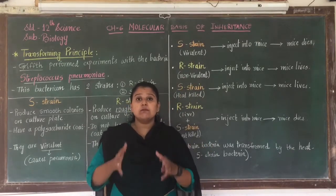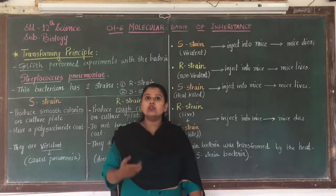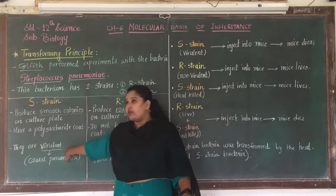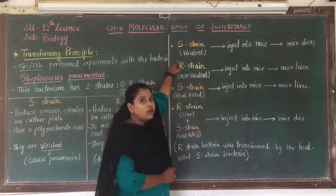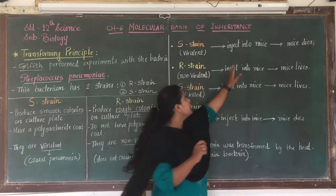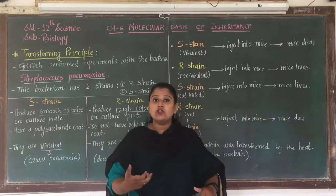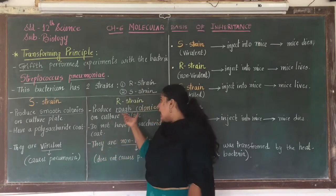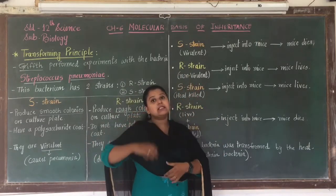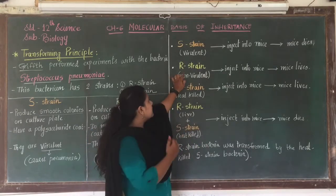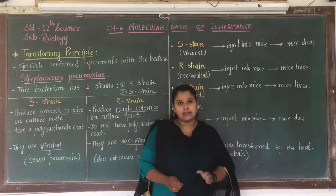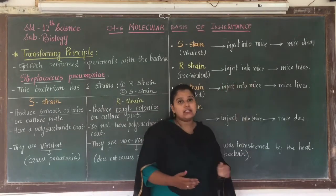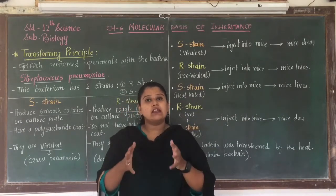Griffith chose mice for his experiment. First, he injected the virulent S strain into mice — the mice developed pneumonia and died. In the second experiment, he injected the non-virulent R strain into mice — since R strain cannot cause pneumonia, the infection did not develop and the mice survived.